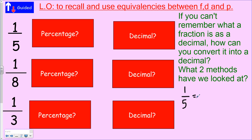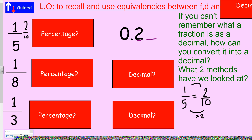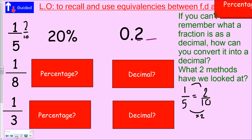The first method is to change the denominator to either 10 or 100. How is 5 related to 10 and 100? It's times two. So if I times the bottom by two and the top by two, that makes two tenths. Two tenths as a decimal — it has one zero, one decimal place — is 0.2. As a percentage it needs two decimal places, so that's 20.